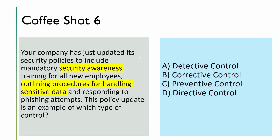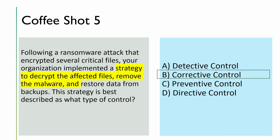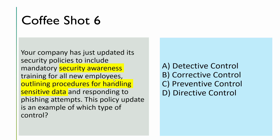Your company has just updated its security policy to include mandatory security awareness training for all new employees, outlining procedures for handling sensitive data and responding to phishing attempts. Which type of control is this? The question is about giving instructions and issuing a directive to all employees. Detective control detects incidents — not applicable. Corrective is post-incident repair — not applicable. Preventive introduces a technical block — not applicable. The question says instruction, so the answer is D — directive control.